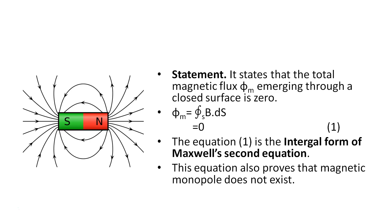So what is the statement? It states that the total magnetic flux emerging through a closed surface is zero. That is, Φ equals the closed integral of B dot dS, where B is a vector and dS is a vector, and this equals zero.